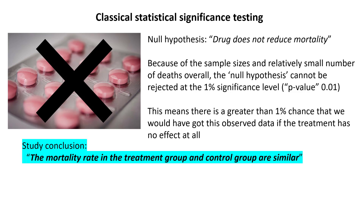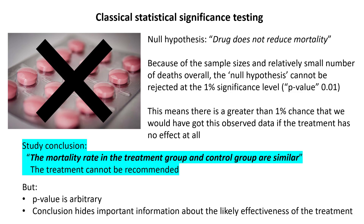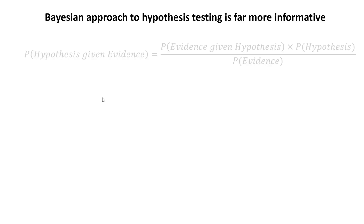This is the actual study conclusion: the paper said that the mortality rate in the treatment group and control group are similar, and that the treatment cannot be recommended. But is that a fair statement? The p-value threshold is arbitrary — what would have been the case if it was 5%? And of course the conclusion hides all of the important information about the likely effectiveness of the treatment, because there's clearly information there which is not contained in that conclusion.